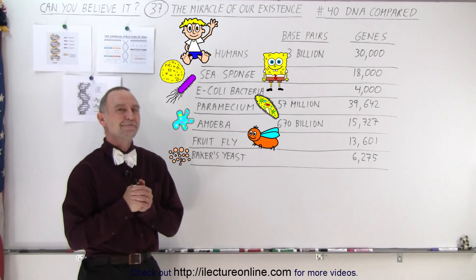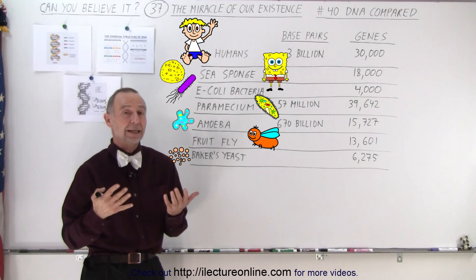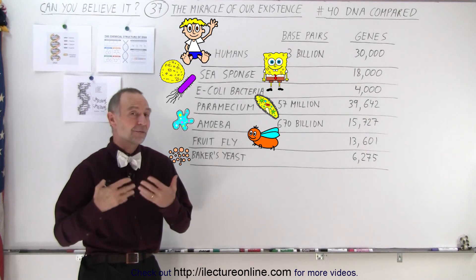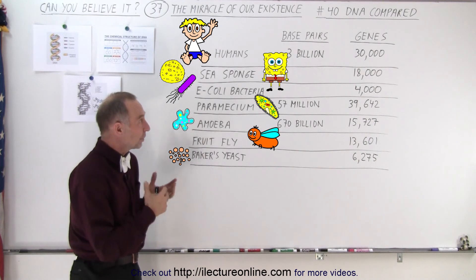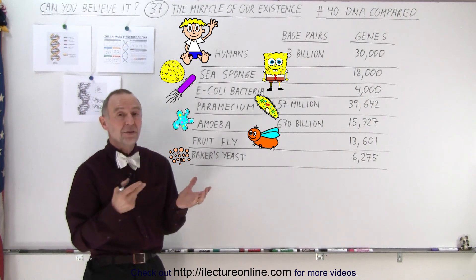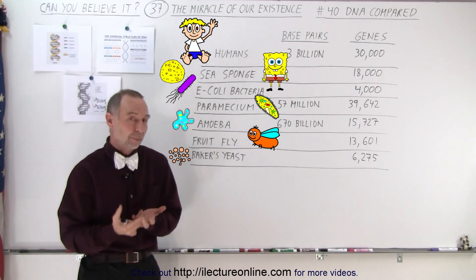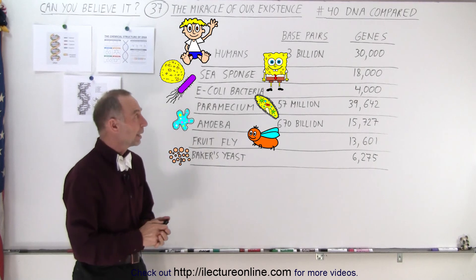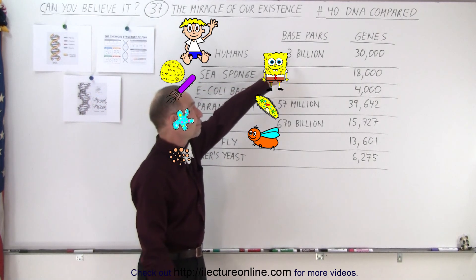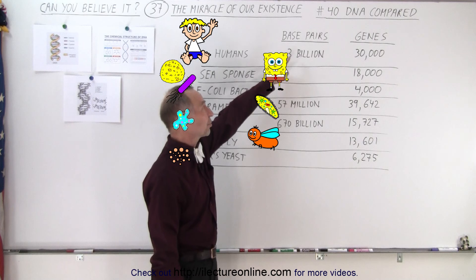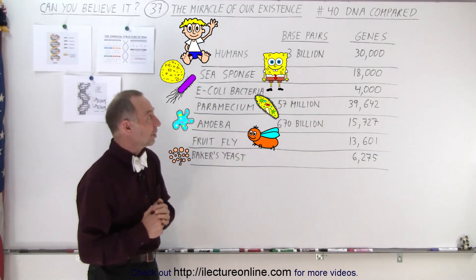Welcome to our lecture online. Here we're going to take a slightly different look at the concept of DNA in life. DNA can be described in two ways: how many base pairs it has, and how many genes those base pairs form. For human beings, we have about 3 billion base pairs in our DNA structure that make up about 30,000 genes.